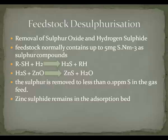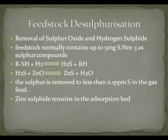Since methane gas contains a little bit of sulfur oxide and hydrogen sulfide impurities, the step of desulfurization is necessary because these impurities would poison the catalysts used in the next chambers. At the end, the zinc sulfide remains in the absorption bin and is removed from the methane.